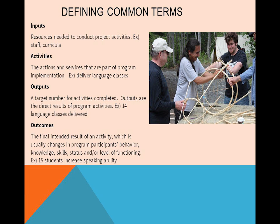Outcomes are the final intended result of the activity — usually changes in program participants' behavior, knowledge, skills, status, or level of functioning. The outcome is the whole reason you did this project to begin with, and can also be your project goal. For our language project, we want to see a change in the speaking ability of our students. Your outcome usually includes a target number based on your inputs, activities, and outputs. For example, if you can only deliver language classes to one grade level, you'd set a reasonable target for how many students increase their speaking ability.